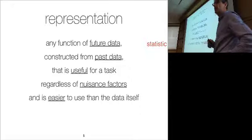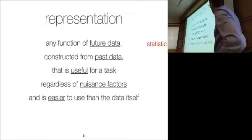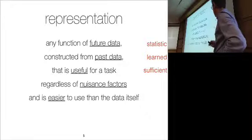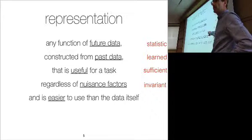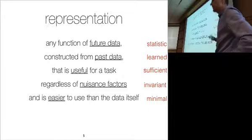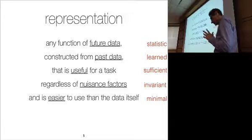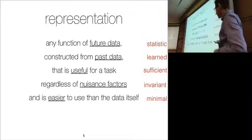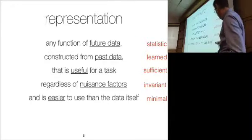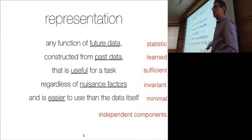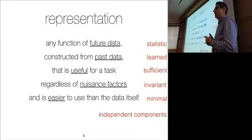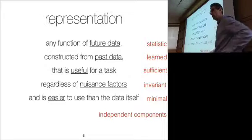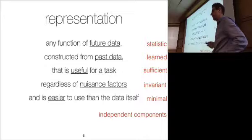These concepts are well-established in classical statistical decision theory. A function of the data is a statistic. We want it to be sufficient — meaning as good as the data for the task. We want it to be invariant, or at least insensitive, to nuisance factors. We want it to be minimal in some sense of complexity — whether algorithmic or information complexity, it generally relates to the size of the sigma algebra constructed. And ideally we want the components to be independent, measured by multi-information or total correlation, which in deep learning is informally called disentanglement.